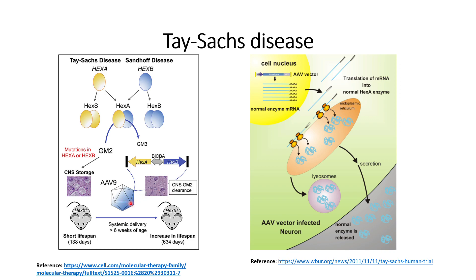This GM2 clearance could be because of the injection of the plasmid of interest that generates normal HEXA alpha and beta subunits. How the adeno-associated virus actually works is that it takes the plasmid of interest into the nucleus of the cell, where it gets integrated with the host genome. Since the normal HEXA and HEXB genes have been integrated into the host genome, the host cellular machinery will transcribe and translate this normal gene.